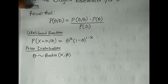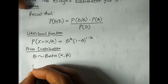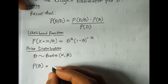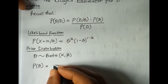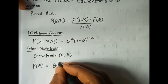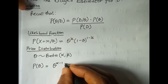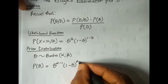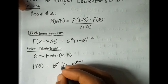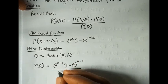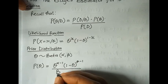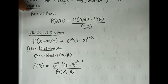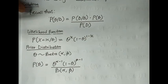This means the prior probability of theta will be equal to theta^(α-1) times (1 minus theta)^(β-1), all over Beta(α, β). That is what we get from the prior distribution.